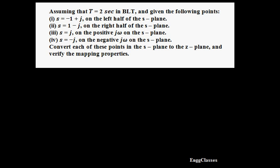It has been given that assuming T equal to 2 seconds in BLT, which stands for bilinear transformation. The first point says s equal to minus 1 plus j. That lies on the left half of the s-plane. That depends on the real part — if it is less than 0, it lies on the left half of the s-plane.